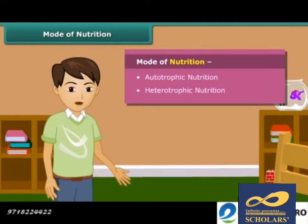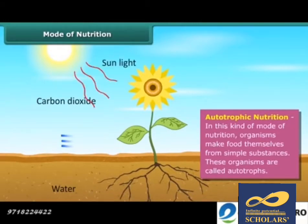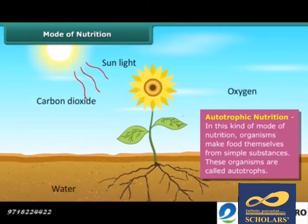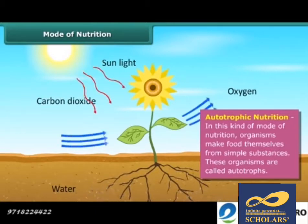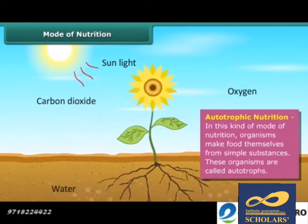But what are they? The mode of nutrition in which organisms make food themselves from simple substances is called autotrophic nutrition, and these organisms are called autotrophs. Green plants are the examples of autotrophs.